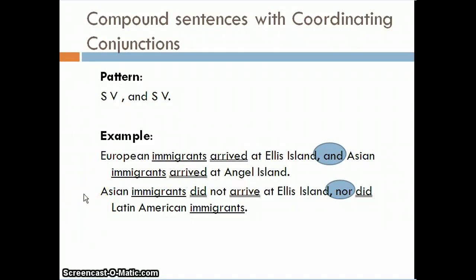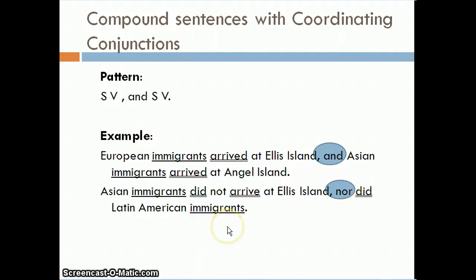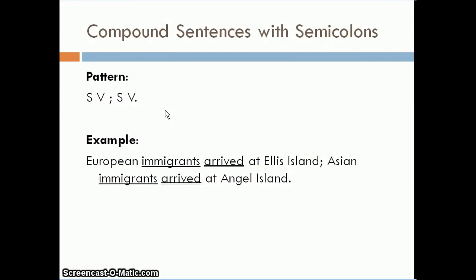Here's a special case: 'Asian immigrants did not arrive at Ellis Island, nor did Latin American immigrants.' When using the coordinating conjunction 'nor,' the subject and verb of the second clause are inverted — the verb 'did' comes before the subject. This is the only coordinating conjunction where we use the verb before the subject. Otherwise, we follow the standard pattern: subject + verb, comma, coordinating conjunction, subject + verb.